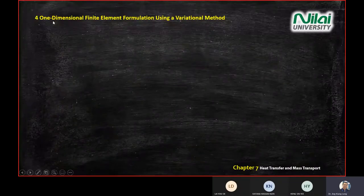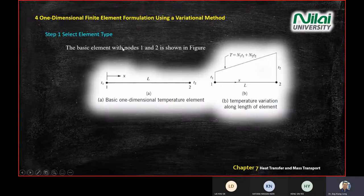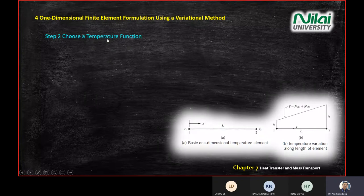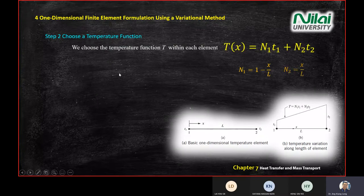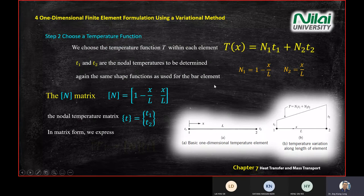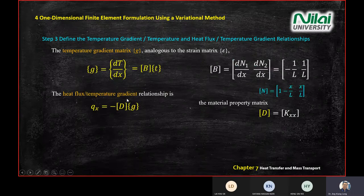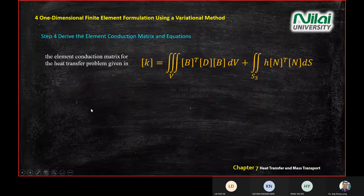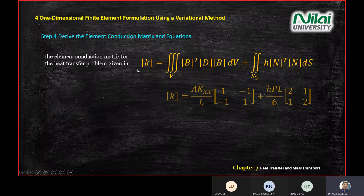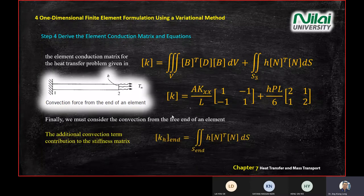Last lecture we covered one-dimensional finite element formulation, going through six steps: step one, choose the element type; step two, choose the temperature function; step three, find the temperature gradient, which gives the G matrix and heat flux matrix; then focus on the conduction matrix and all related equations.